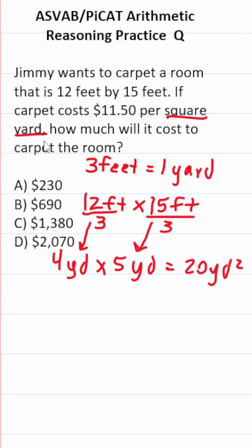This is a conversion problem—we're given a cost in terms of square yards and dimensions in terms of feet. So we're going to have to convert these feet to yards by dividing them by 3, since there are 3 feet in every yard.